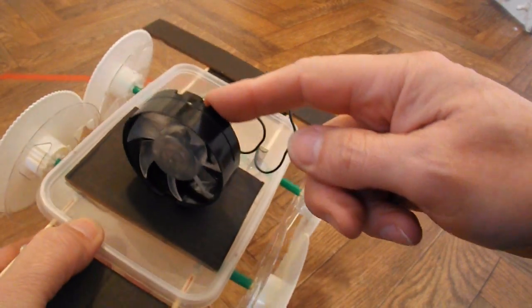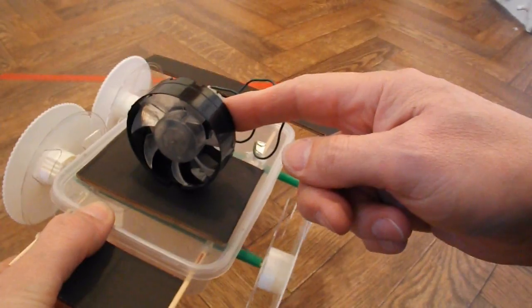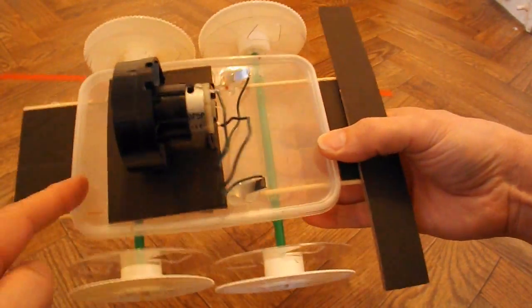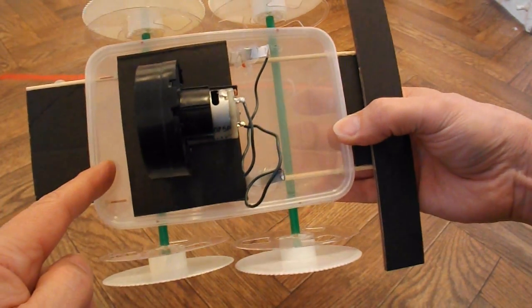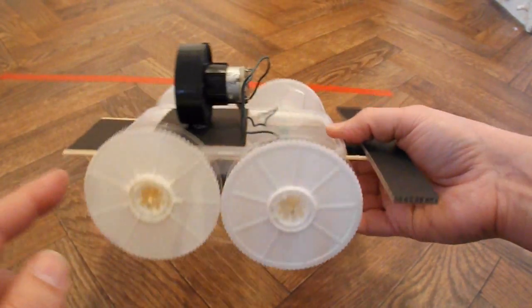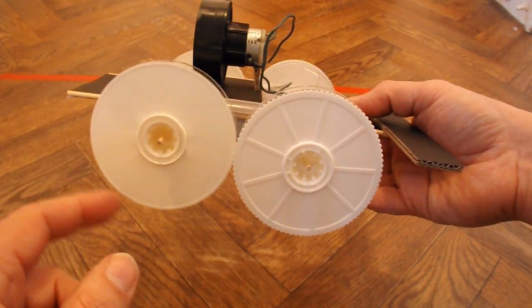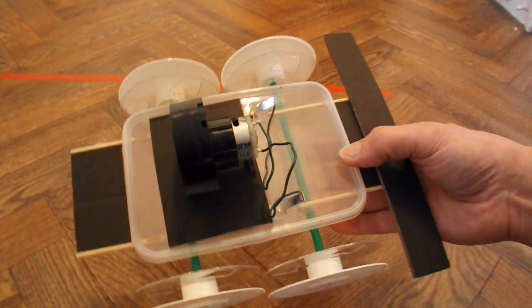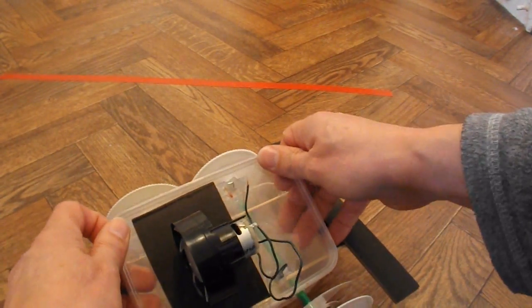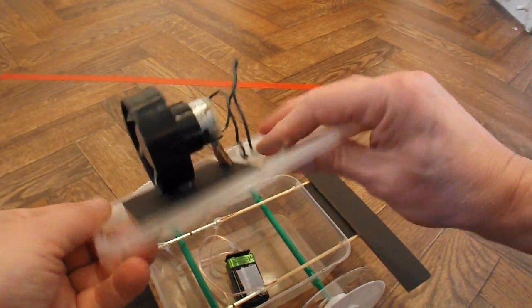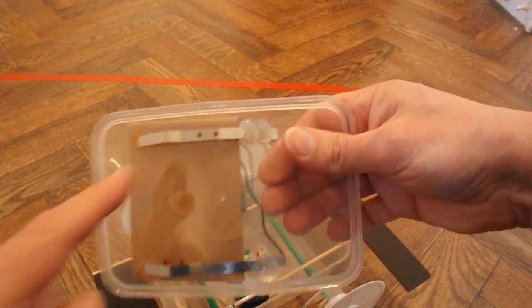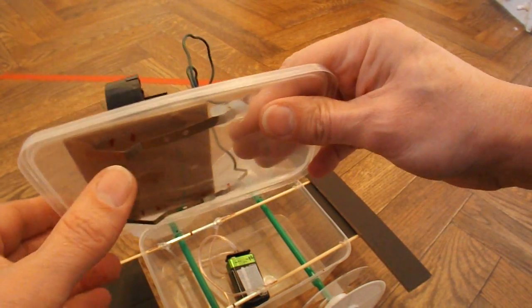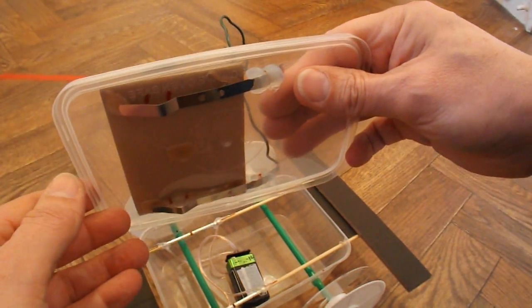The fan is one of my hairdryer fans. The chassis is a storage box. The wheels are the spools from VHS videocassette tapes. Those strips of metal also came out of the VHS videocassette tapes. So, they were quite handy. They're a little bit springy, which is just what I needed.